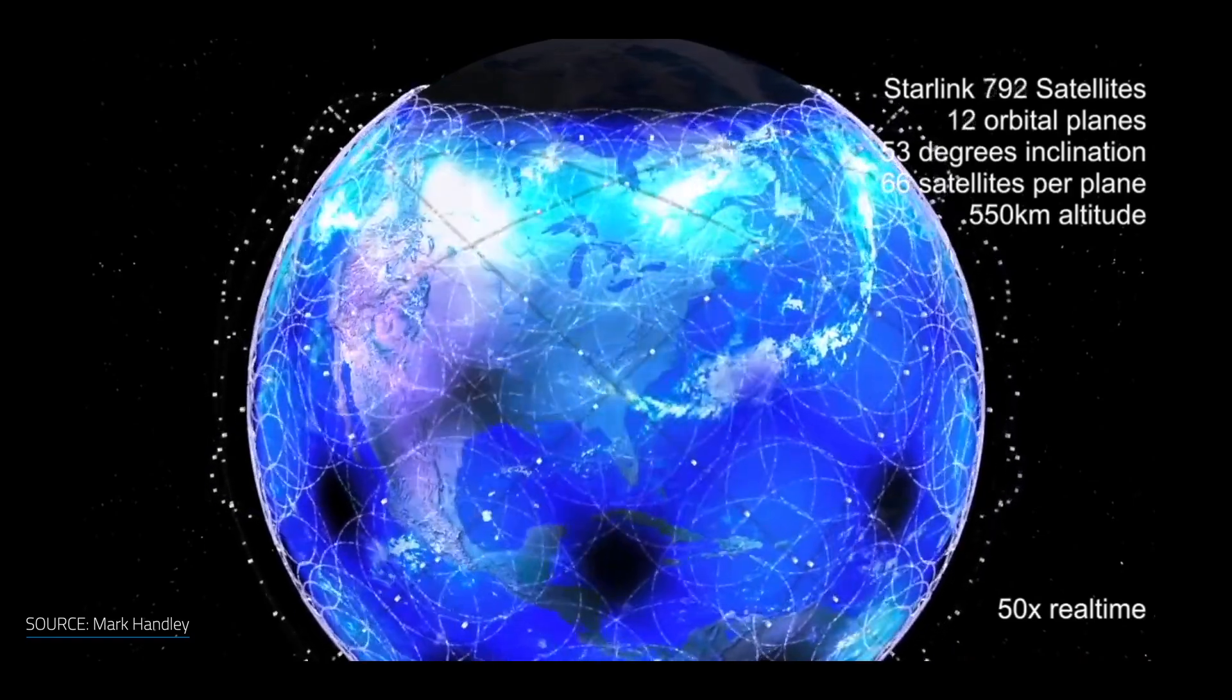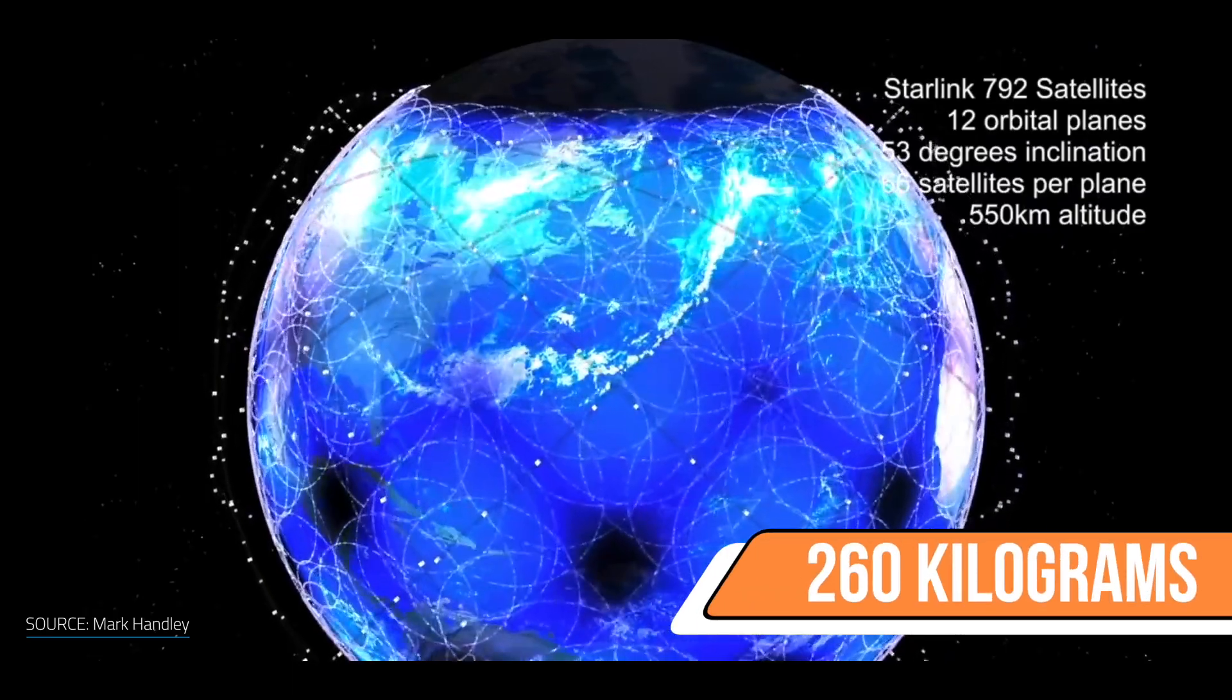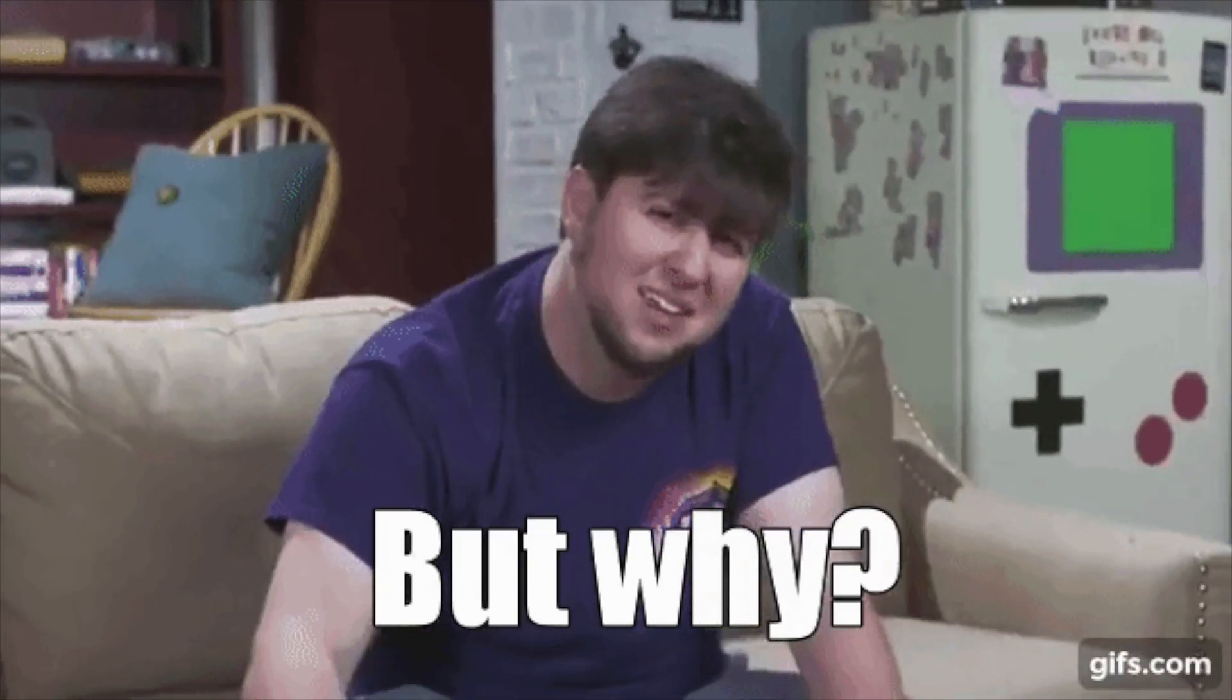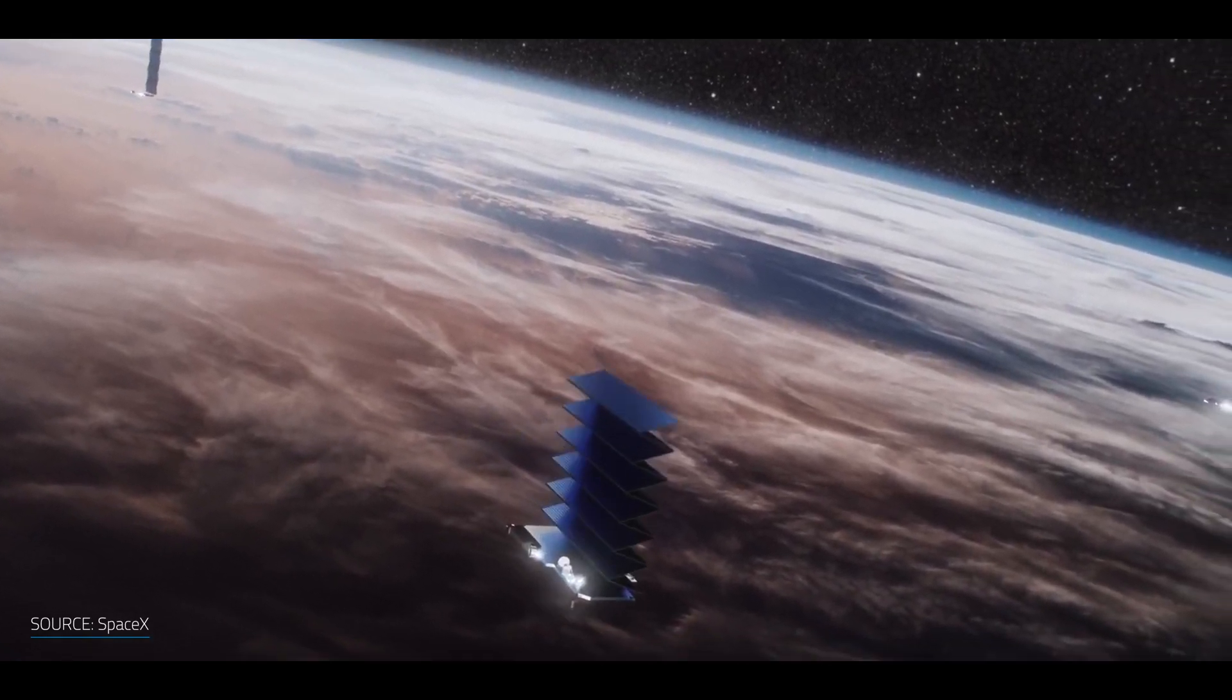Okay, so Musk wants to paint the sky with satellites about the size of a table and weighing 260 kilograms. But why? What's the benefit of Starlink versus our current internet satellites?